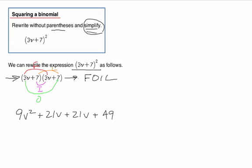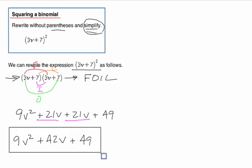We want to notice the like terms - those combine. So we've got 9v squared plus 42v plus 49. That's the answer.